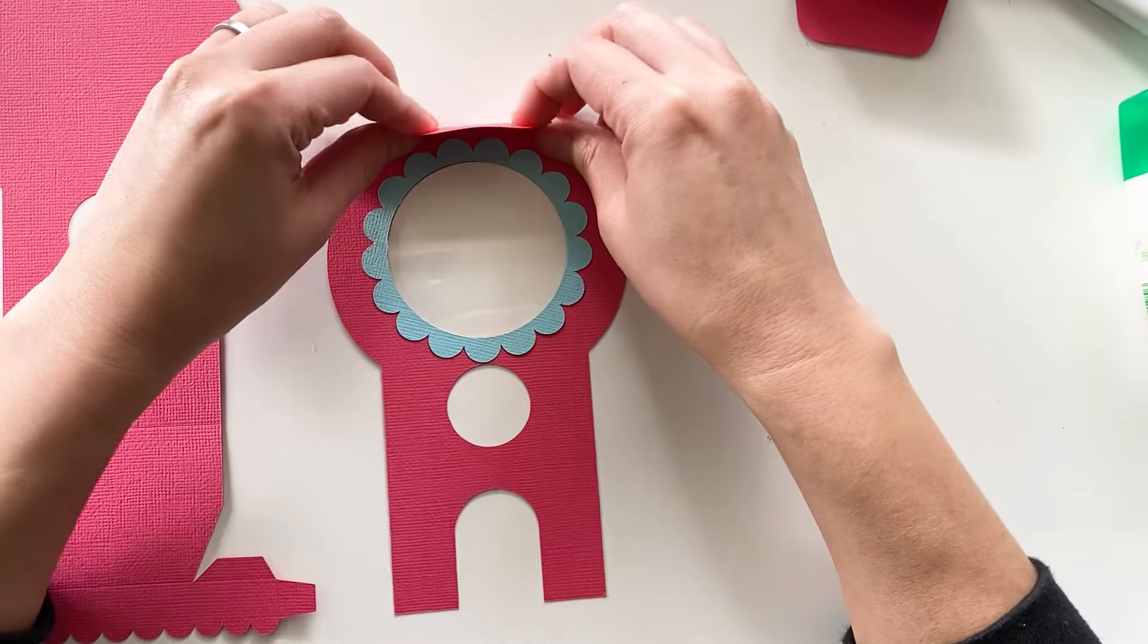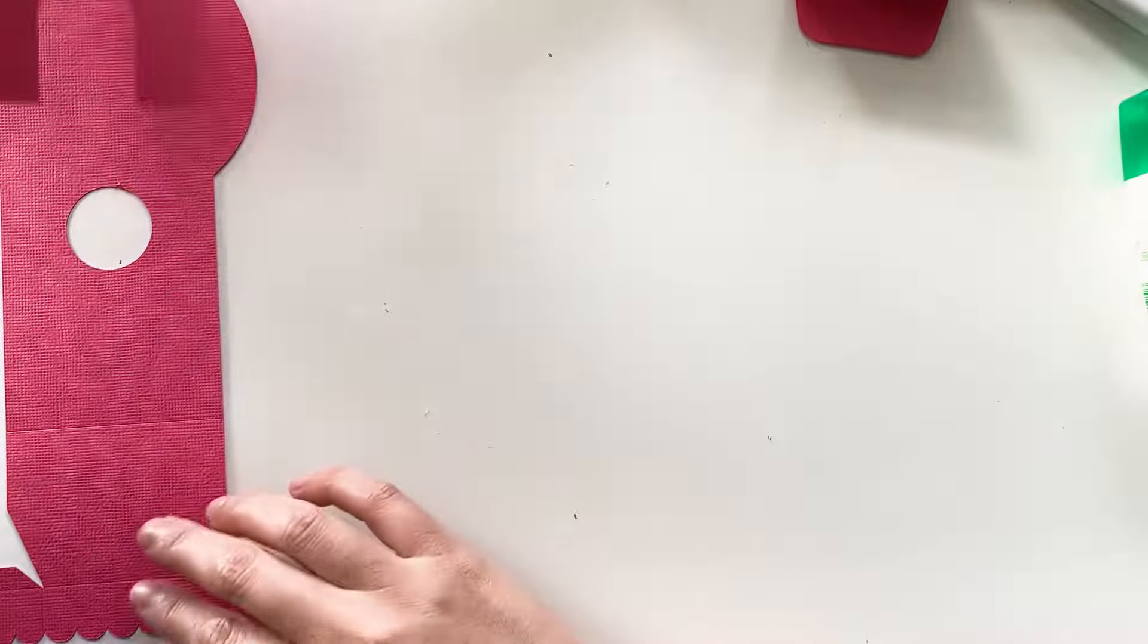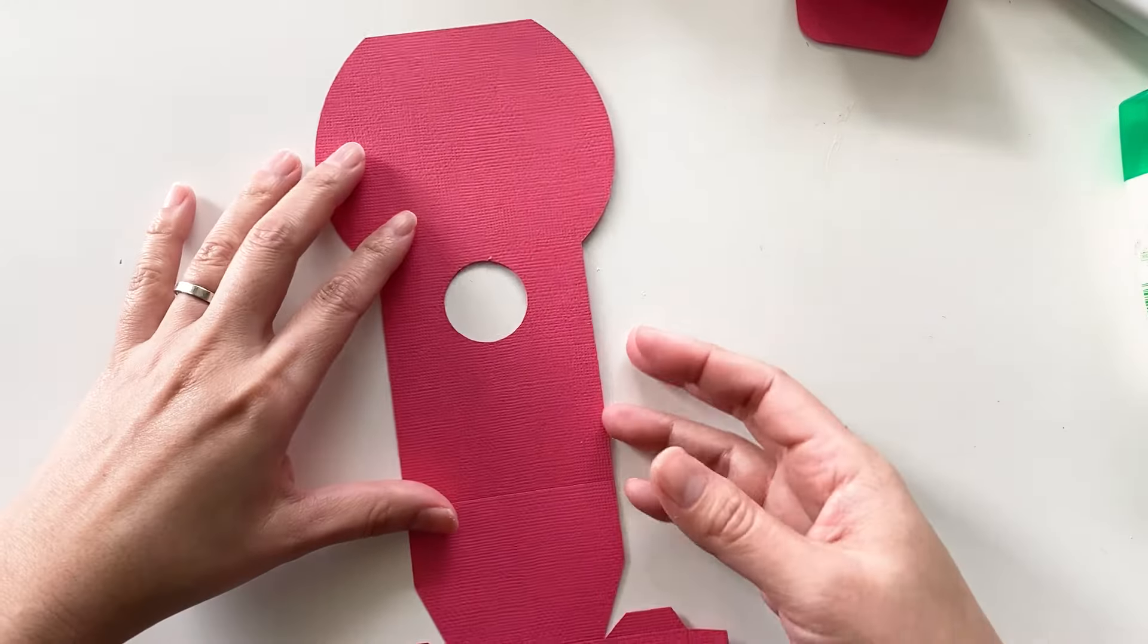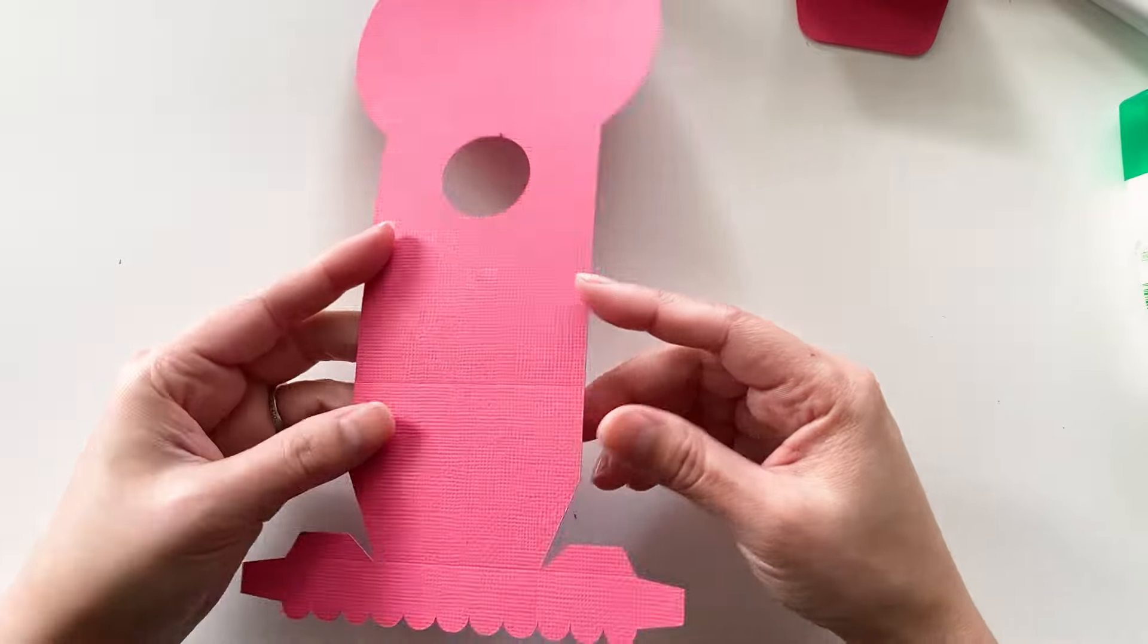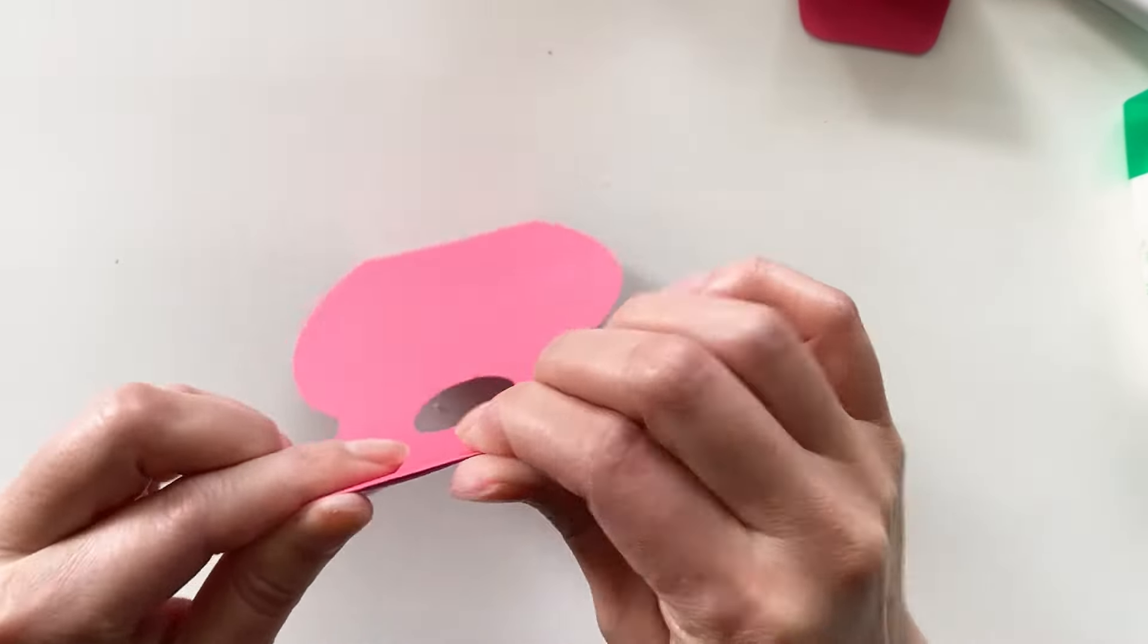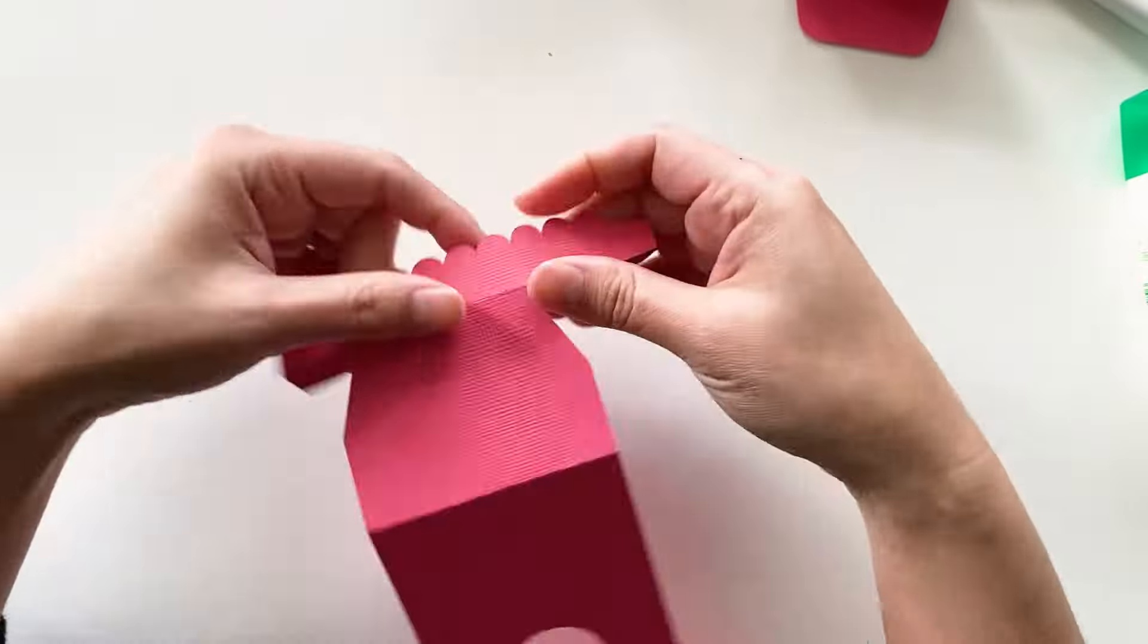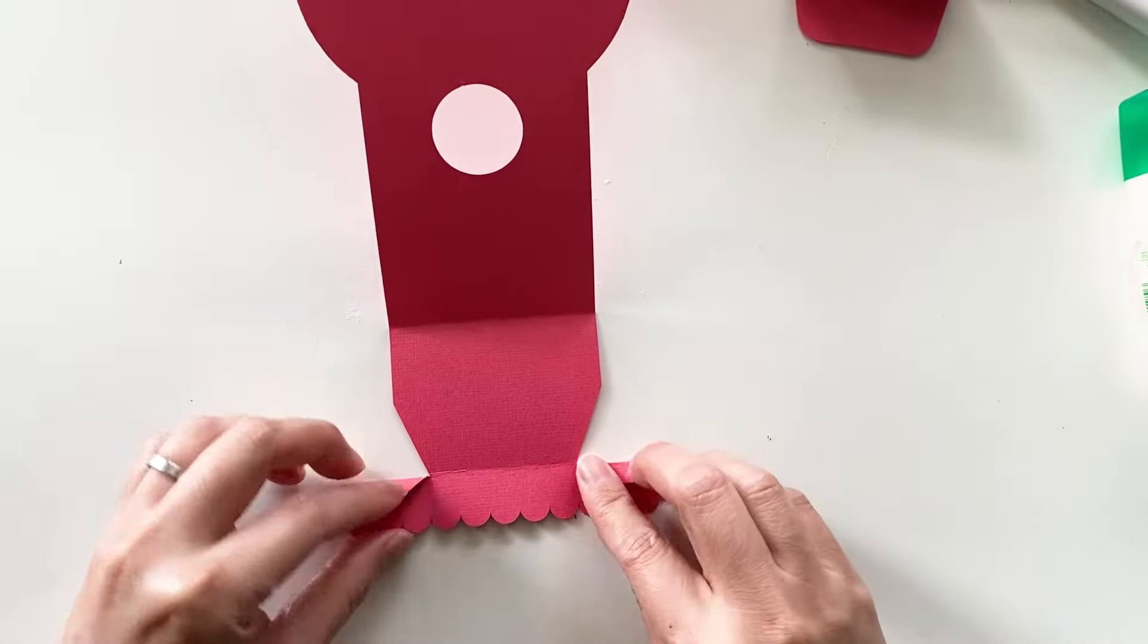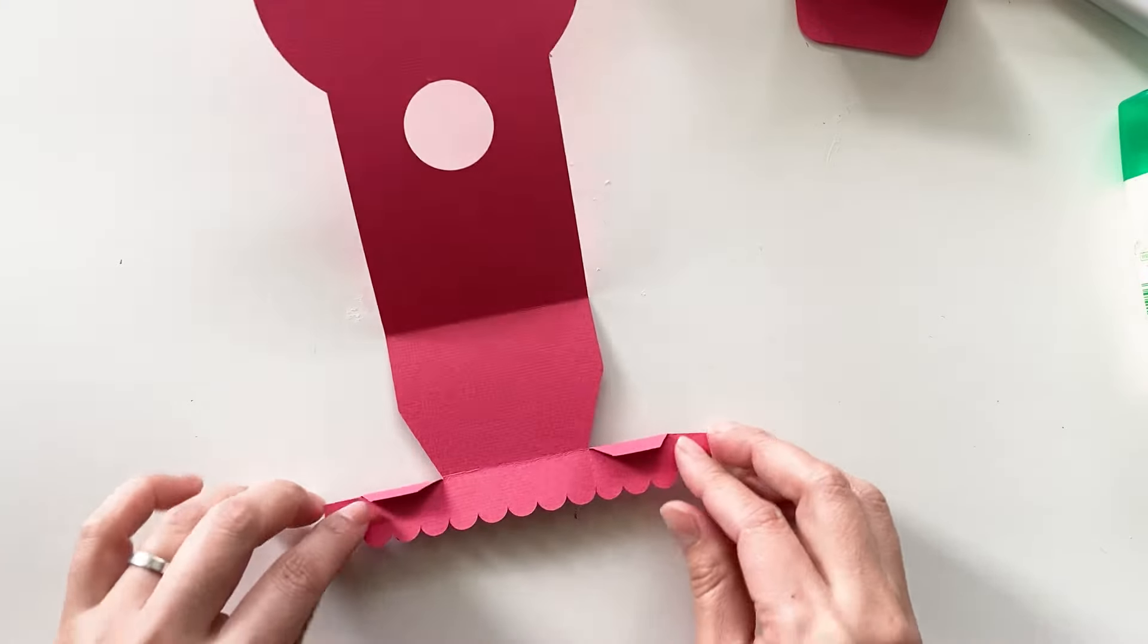Fold the tabs on the top. And get this piece for the gumball machine. Fold all the folding lines. Glue those two tabs to here and don't worry about those two yet.